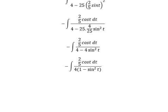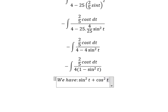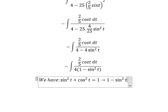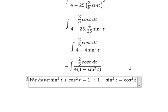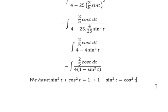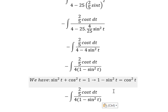Next we have sine² t plus cosine² t equals to 1, so that means we have 1 minus sine² t equals to cosine² t. So we put cosine² t here.